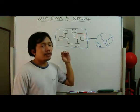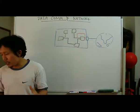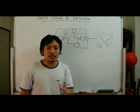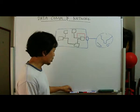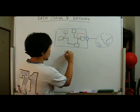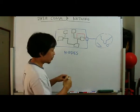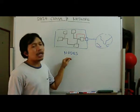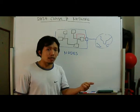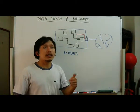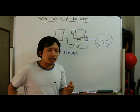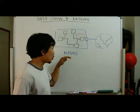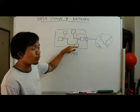In a network, there must be devices that can be used to send data and receive data. These devices are generally known as nodes. This term is used because a node can be anything at all — a computer, most probably, but also a camera, a printer, or a projector. There are lots of different kinds of nodes, but most probably they are computers.